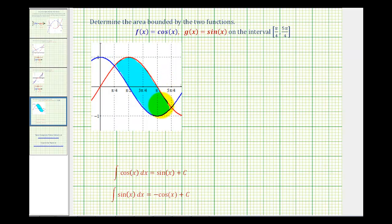In order to do these types of problems, we really need two things. We first need to determine the x-coordinates of the points of intersection. We'll use those as our limits of integration and then when we set up the integrand, we have to have the top function minus the bottom function. So it is important that we graph both functions on the same coordinate plane.